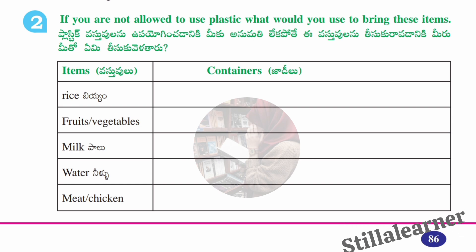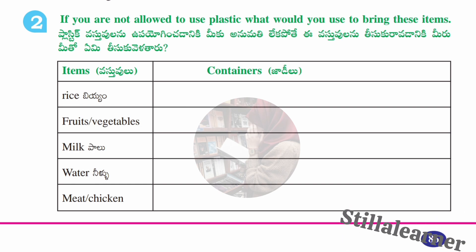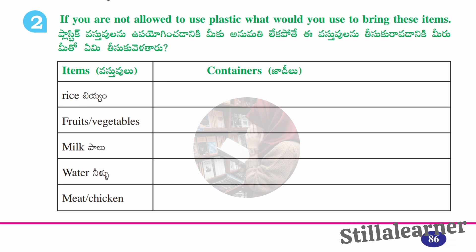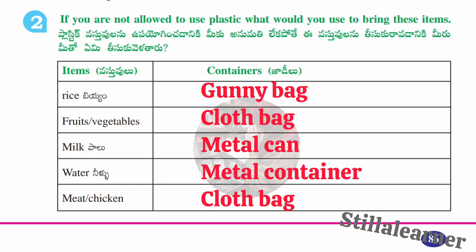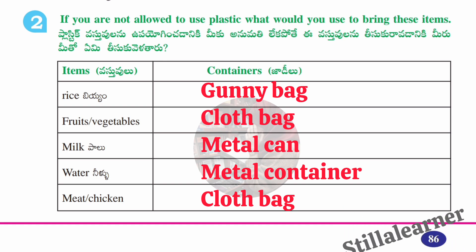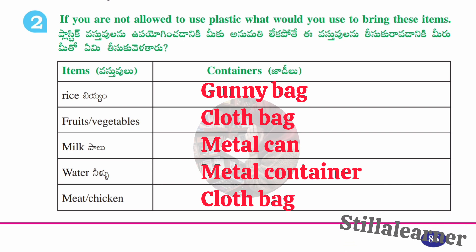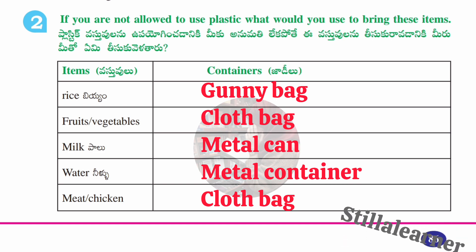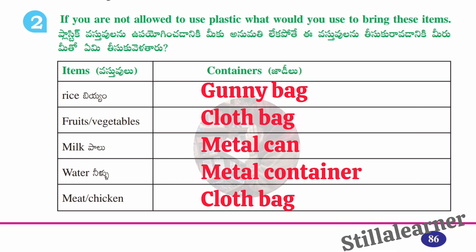The second section asks: if you are not allowed to use plastic, what would you use to bring these items? To carry rice — gunny bags; fruits or vegetables — cloth bag; milk — metal can; water — metal container; meat or chicken — cloth bag. In this way we can say no to plastic.